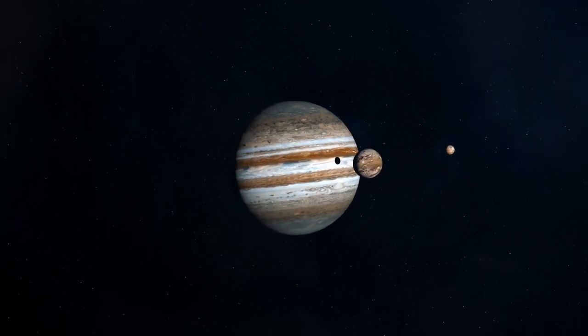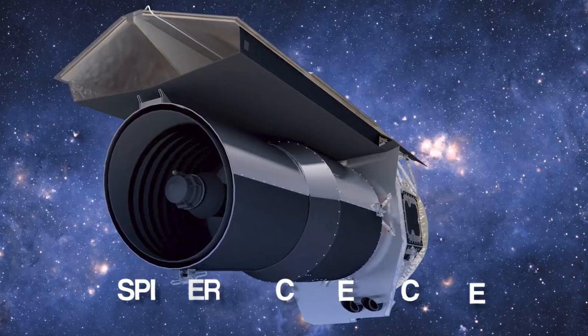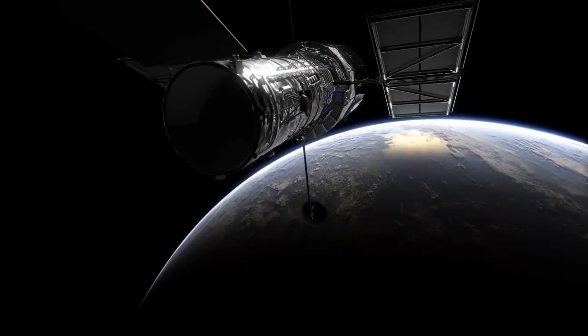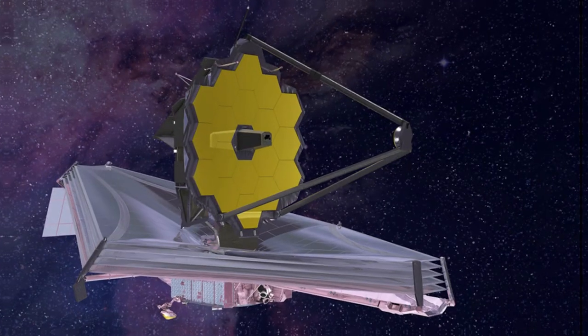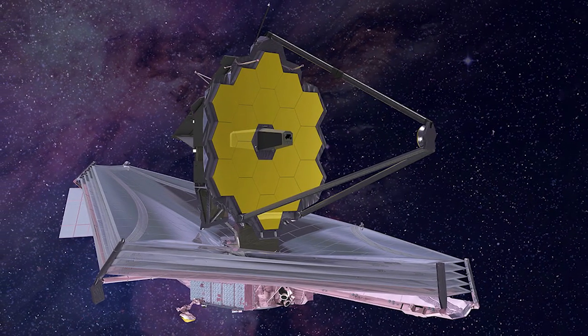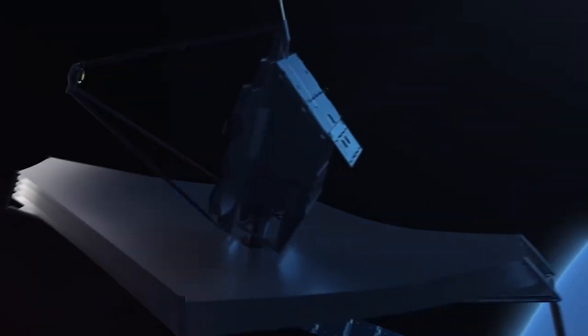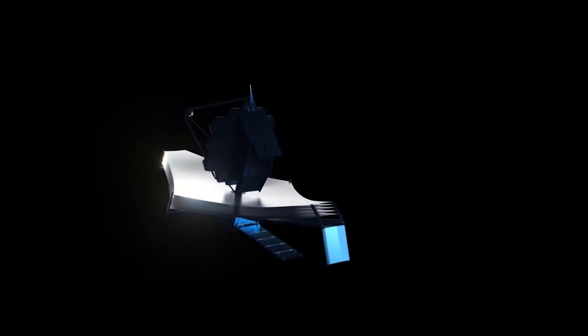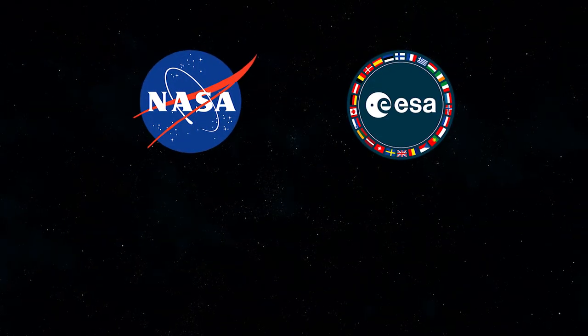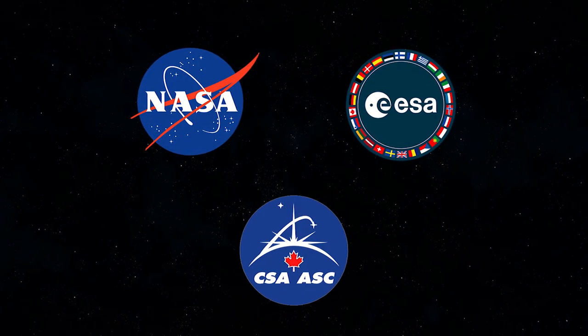While other highly sophisticated telescopes, such as the Hubble Space Telescope and the Spitzer Space Telescope, have been placed in orbit in the past, JWST is the next generation of space technology that was intricately designed and developed through an international collaboration between NASA, the European Space Agency, and the Canadian Space Agency.